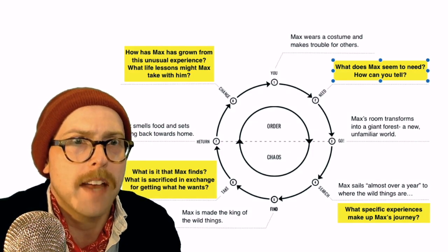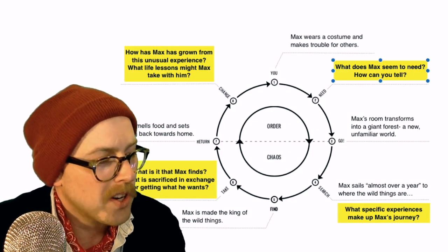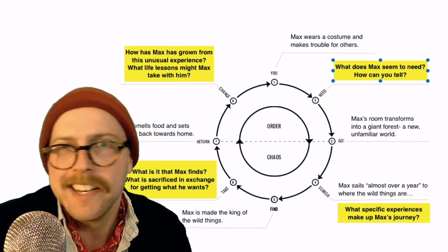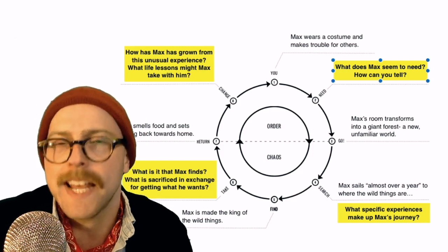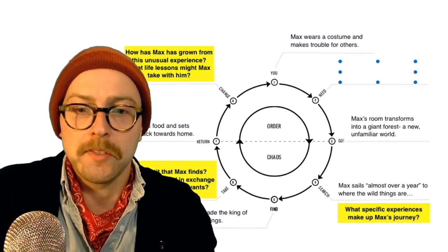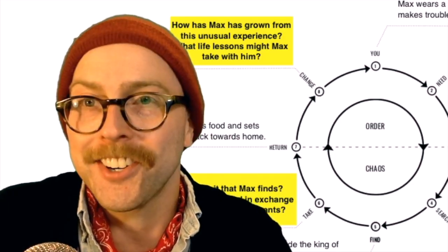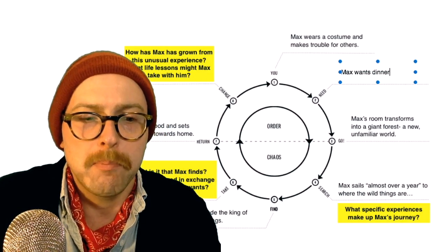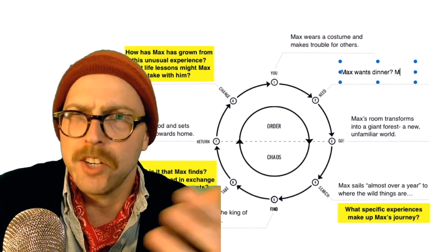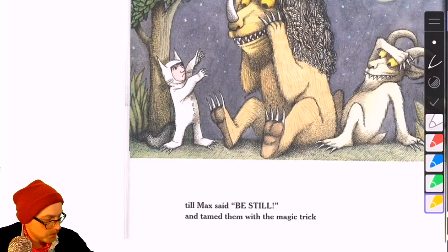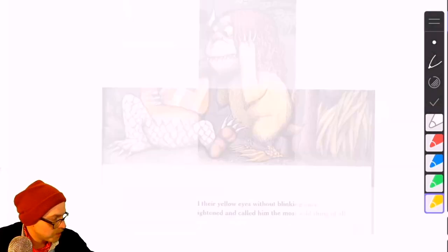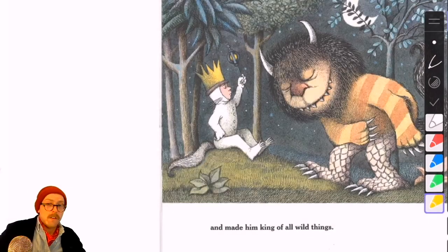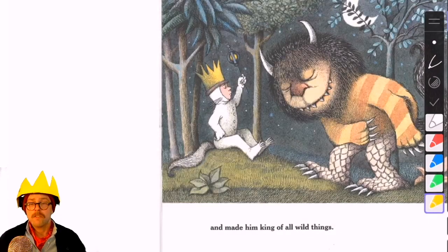The other thing I wanted to talk about is that need. We're starting to see a little bit more of what Max needs, but Maurice Sendak never really comes right out and says it. At its most obvious, he wants dinner — he's hungry. Maybe he's also looking for some sort of power, some sort of control. He wins the monsters over with a magic trick, and then he is made the king of all the wild things.